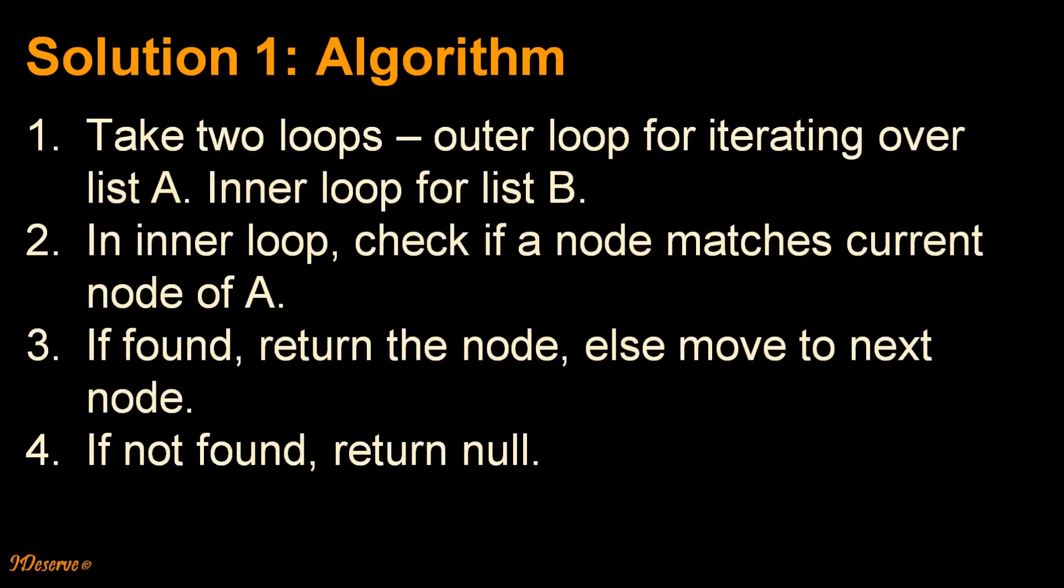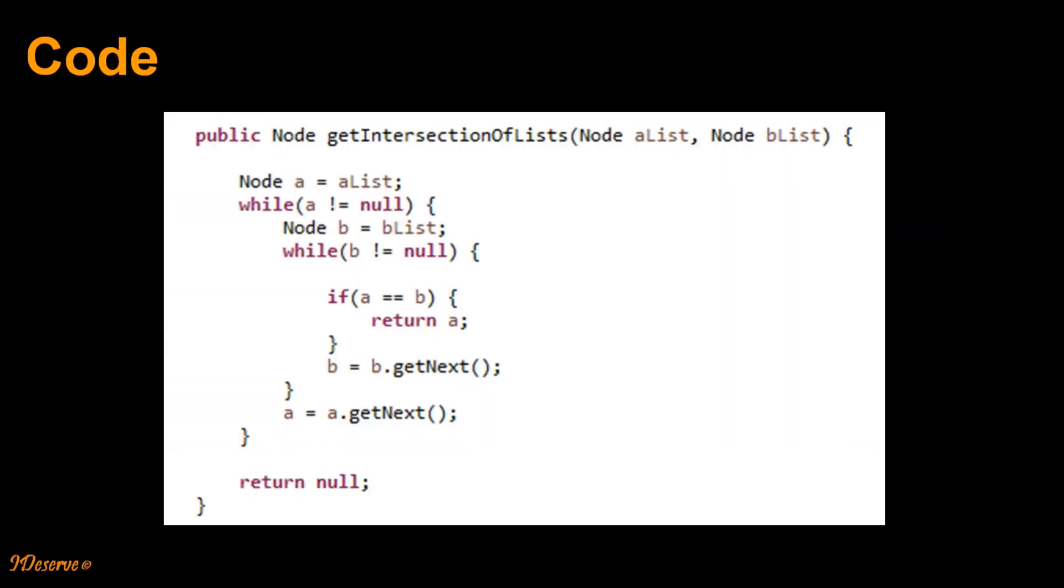The algorithm is we take two loops, outer loop for iterating over list A, inner loop for list B. In inner loop check if node matches current node of A. If found return the node, else move to next node. If not found return null. Here is the code for the algorithm which is pretty straightforward.